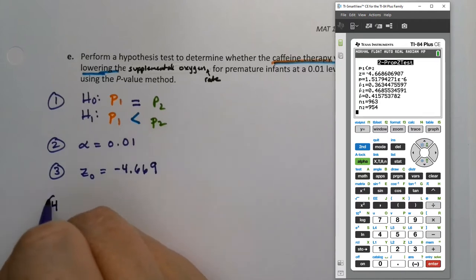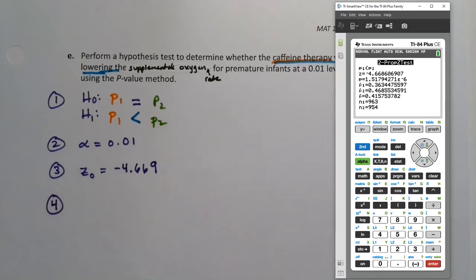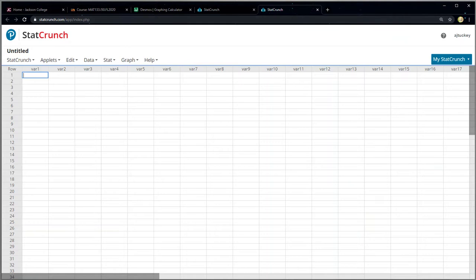Step four, we need to draw a picture. Well, the P value comes out of that right there. But we can also get this with StatCrunch and I should show you StatCrunch anyway. So let's do that.